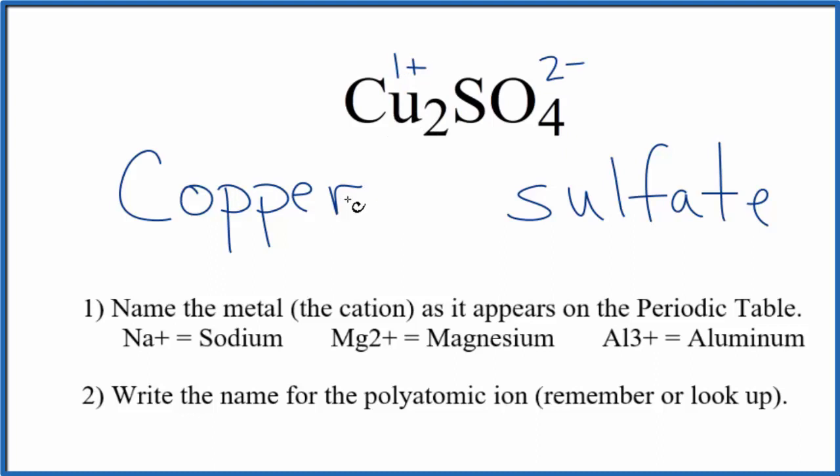We need to show that in the name for Cu2SO4. So we put a 1, Roman numeral 1, parentheses around it, and the name for Cu2SO4 is copper 1 sulfate.